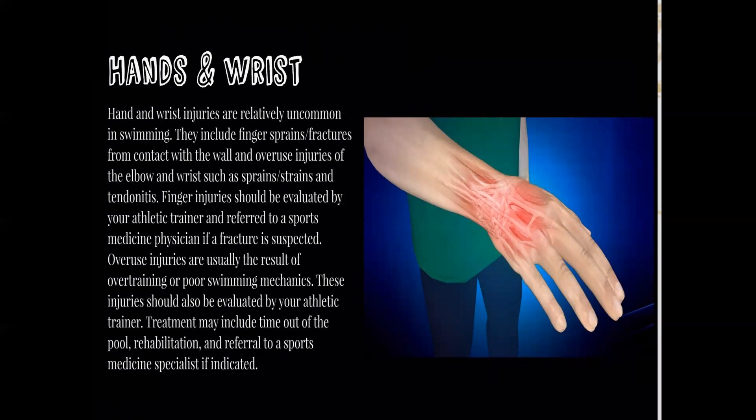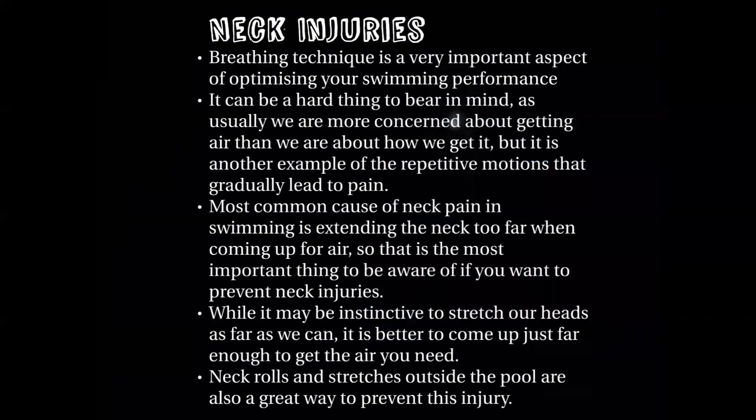Hand and wrist injuries are relatively uncommon in swimming. They include finger sprains, fractures from contact with the wall, and overuse injuries of the elbow such as sprains, strains, and tendinitis. Finger injuries should be evaluated by an athletic trainer and referred to a sports medicine physician if a fracture is suspected. Overuse injuries are usually the result of overtraining and poor swimming mechanics, and may require time out of the pool, rehabilitation, and referral to a sports medicine specialist.